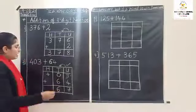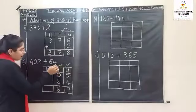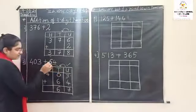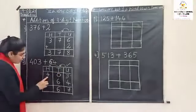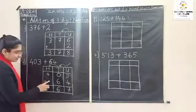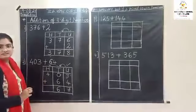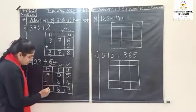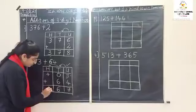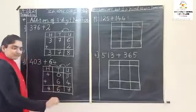Now come to hundreds place. Four plus no number here, so four plus zero is equal to four.